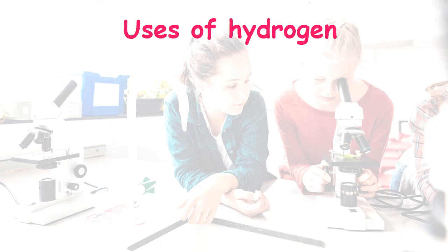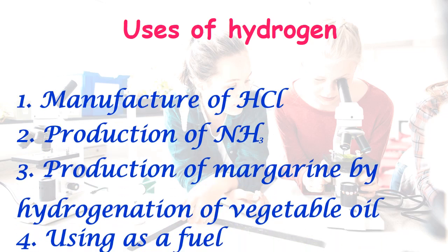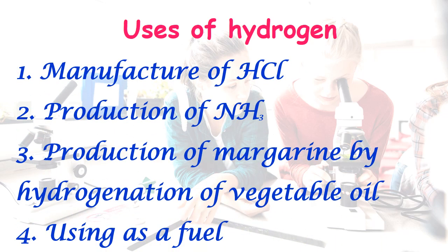The other by-product of the membrane process is hydrogen. Uses of hydrogen include manufacture of hydrochloric acid, production of ammonia, production of margarine by hydrogenation of vegetable oil, and use as a fuel.